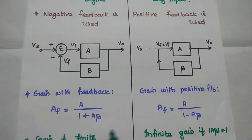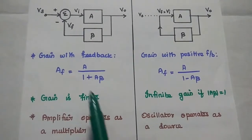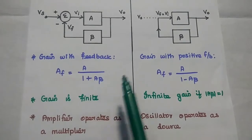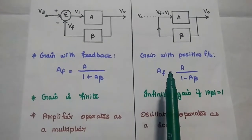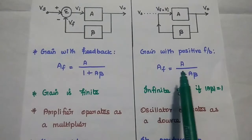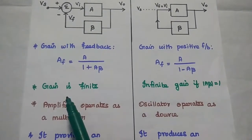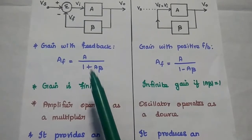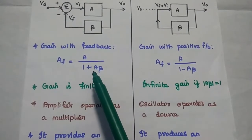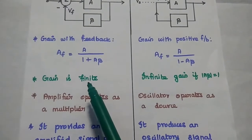A positive feedback method is used. The gain with feedback for the amplifier is AF = A / (1 + Aβ). For the oscillator, the gain with positive feedback is AF = A / (1 − Aβ). Here, the gain is finite because of the formula A / (1 + Aβ), so we can get a finite gain.